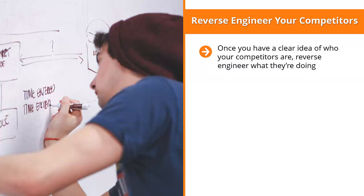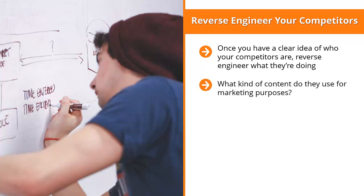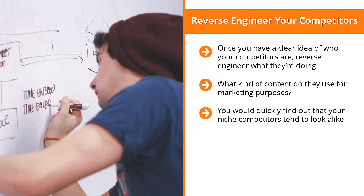How do they speak to the needs of the people you're trying to reach? What do their websites look like? What kind of social media accounts and marketing content do they use? How are their pages designed? You have to keep these questions in mind as you research one competitor after another. After processing your competitors in a systematic and methodical way, you will find that your niche competitors tend to look alike, address the same problems, offer the same solutions, and have similar social media accounts.